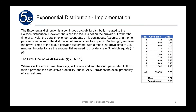Now let's look at the exponential distribution. It is a continuous probability distribution related to the Poisson, but it focuses on arrival times rather than counts. For example, assume we're at a theme park and want to know the distribution of arrival times to a queue. On the right we have arrival times with a mean of 3.57 minutes.